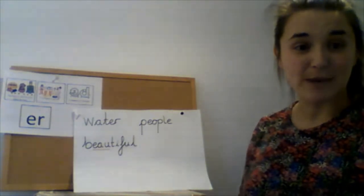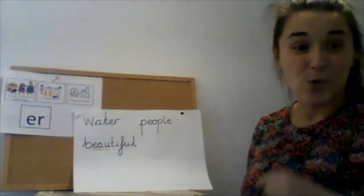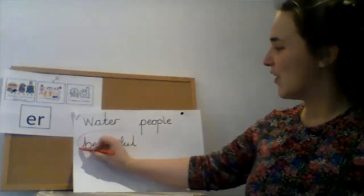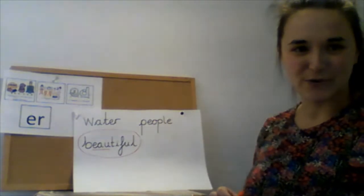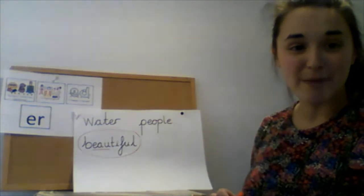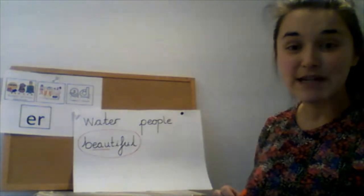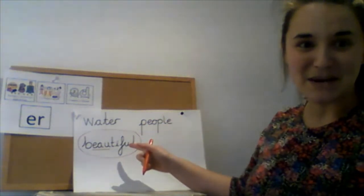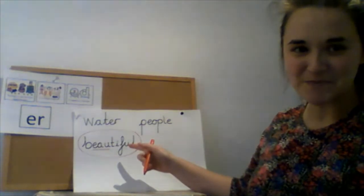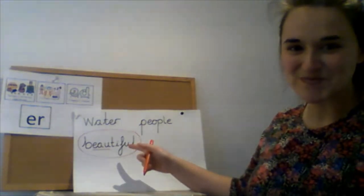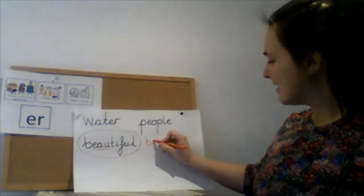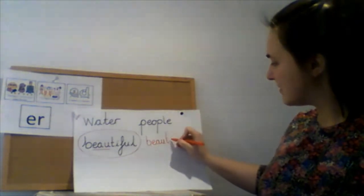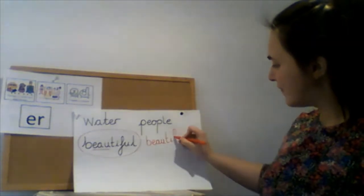You might want to play beat the mum or beat the dad — we're going to play beat the teacher with this word: 'beautiful'. Put it on your piece of paper or your board, and let's see how many times we can write the word 'beautiful' in a minute. Are you ready? Are you steady? Here we go. B, E, A, U, -tiful. Beautiful.